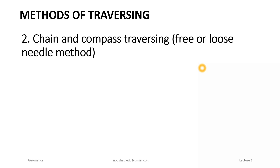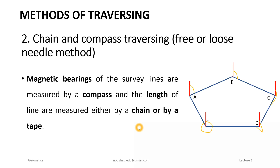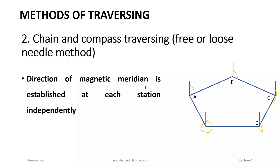The second method is Chain and Compass Traversing, also called the loose needle method or free needle method. In this case, the magnetic bearing of the survey lines are measured by a compass and the length of the lines are measured by either a chain or a tape. The direction, that is the magnetic bearing angle, is measured using a compass, and the magnetic meridian is established at each station.